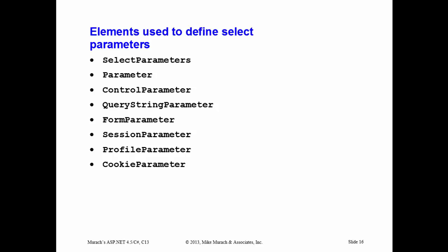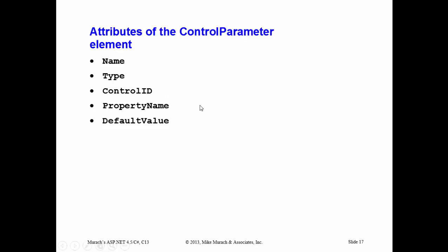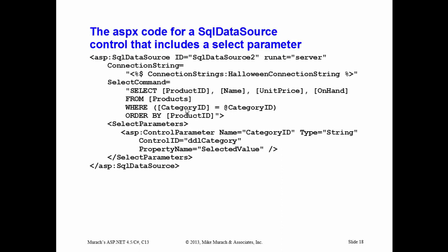The next thing covered is the different elements used to define different parameters. You can have select parameters — you can get parameters from controls on the page, from query string URLs, from other form variables, from session state, from user profiles, or from a cookie. The control parameter is a class in .NET and has properties: name, type, and control ID, which you use for accessing values.